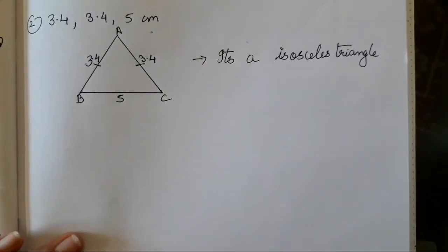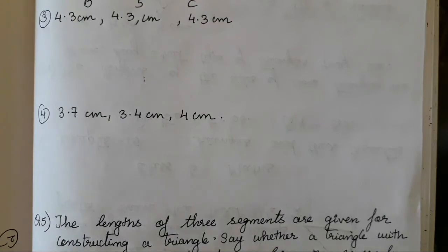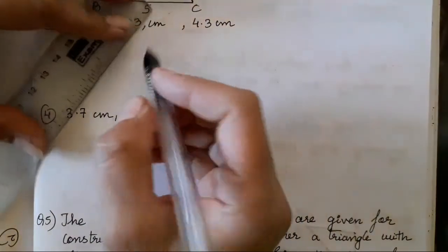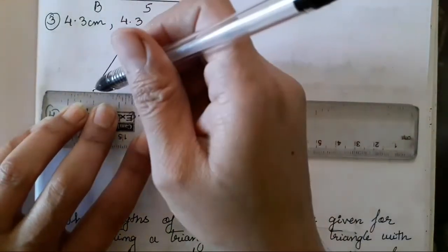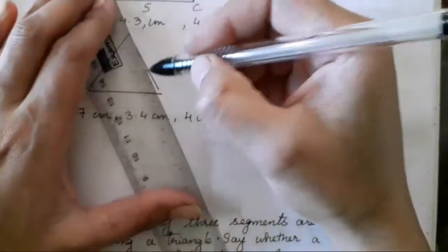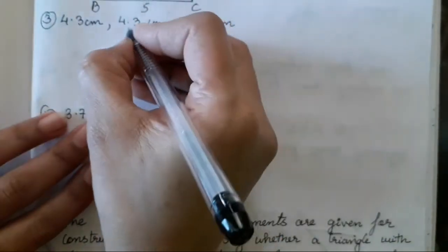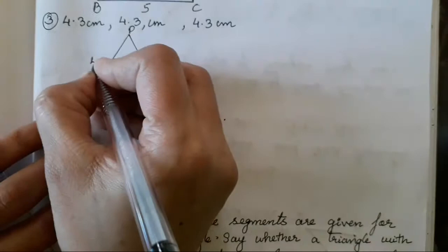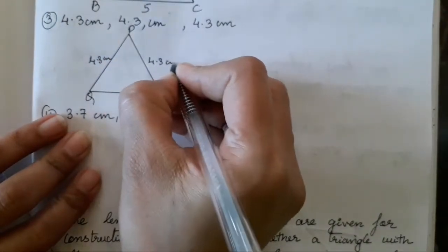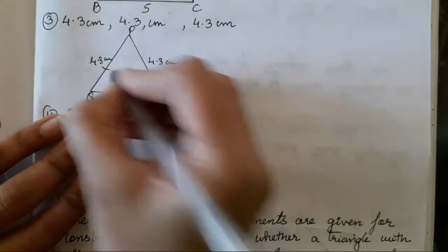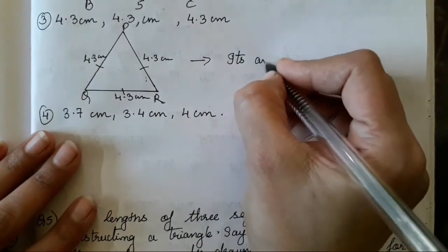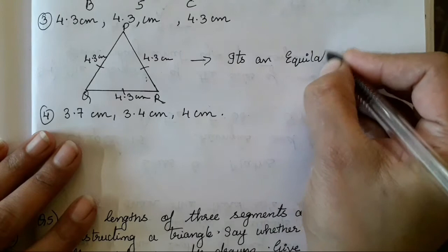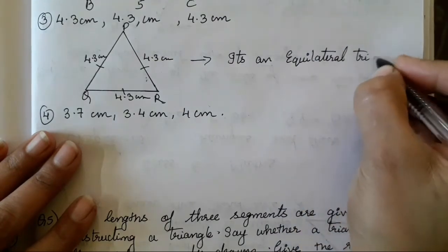Now let's do question number 3. All three sides are equal, that is 4.3 cm each. We will take this triangle as PQR with sides 4.3 cm, 4.3 cm, and 4.3 cm. When all three sides of a triangle are equal, it is an equilateral triangle.